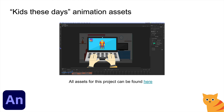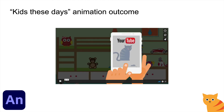All the assets for the project that I've created are available. So if you want to look at how the actual Flash documents — the Flash files — look and all the component parts of those, you've got access to them. You've also got access to all the elements of the animation, including the sound, the images, et cetera. And I'll give you the output as well. So let's get started in Animate.